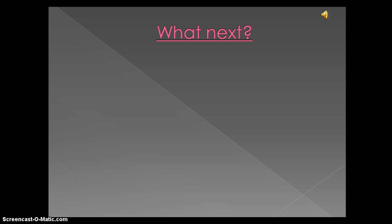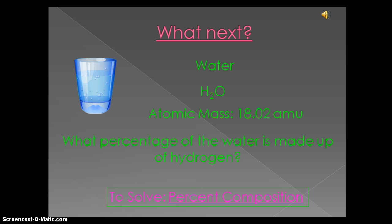What's next? Taking our review of water with the chemical formula H2O, the atomic mass is 18.02 amu. Now, we can take that and determine what percentage of water is made up of hydrogen.